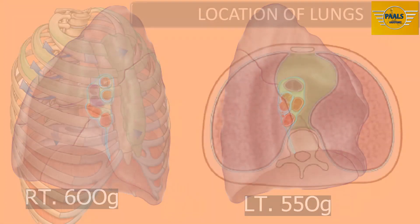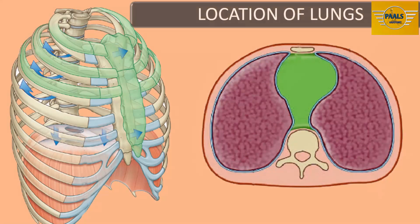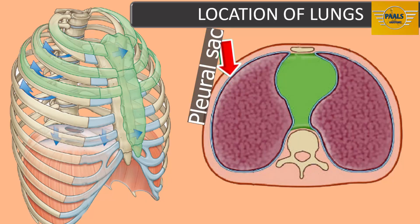These lungs are located in the thoracic cavity. Inside the thoracic cavity, each lung is enclosed inside a membranous cavity called the pleural sac or pleural cavity. There is a space between the two lungs called the mediastinum.